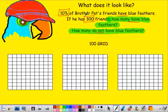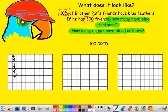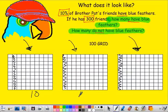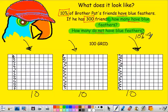Previously we talked about how percent means per 100. So if I have 10%, that would be 10 out of 100. If I look at this set of 100, 10 of those friends are going to have blue feathers. Out of the next set of 100, 10 are going to have blue feathers. And out of the next set of 100, 10 are going to have blue feathers. So that's 10, 10, and 10 — meaning out of those 300 friends, 10% is equal to 30.